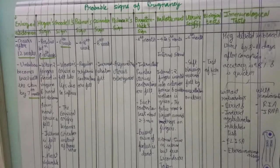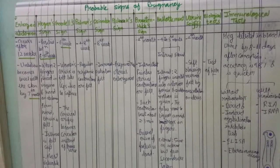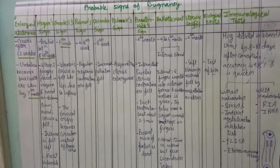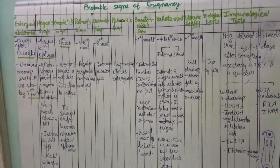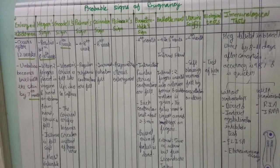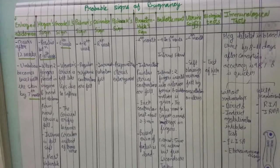Braxton Hicks sign consists of intermittent, painless uterine contractions observed at the end of the fourth month. They are present even when the fetus is dead, and each contraction lasts about two to three minutes.